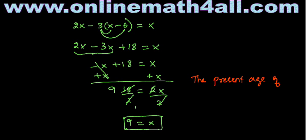So the present age of A is 9. We got the answer. When we see the question it seems difficult, but when we try to solve it, it is actually not difficult. The first thing I did was assume X as the present age of A. Then I wrote the given information in terms of X and formed an equation.